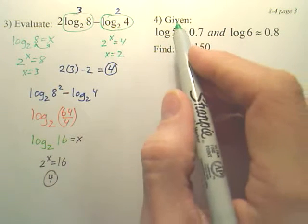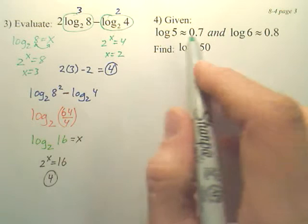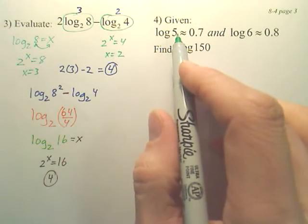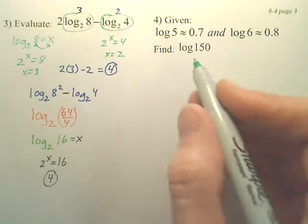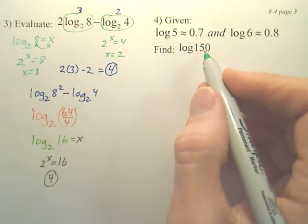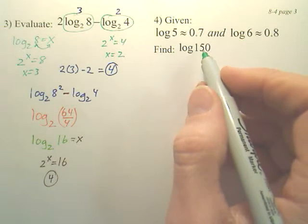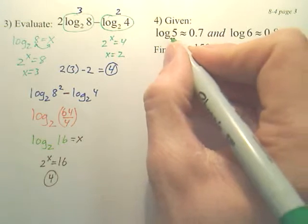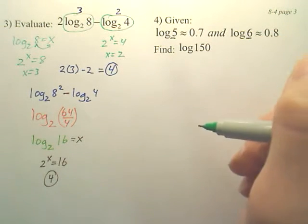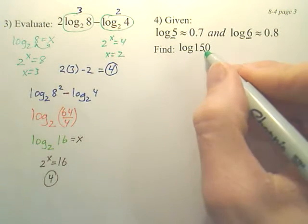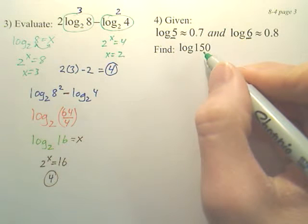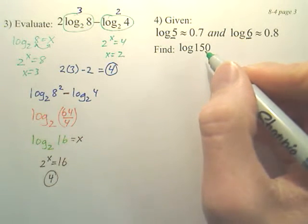Okay. If I give you these two values, which your calculator could give you, and then I ask you to find log 150, here's how you do it. The first thing you need to do is look at these two numbers, and using fives and sixes, you need to create the number 150. By multiplying fives and sixes, you need to make 150.